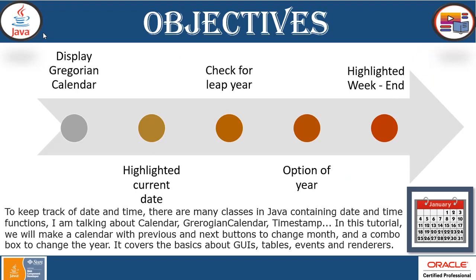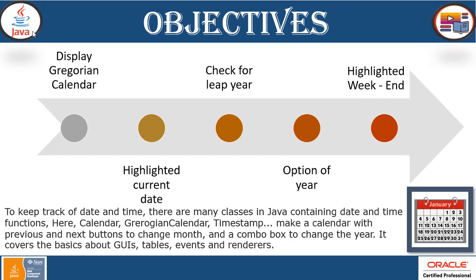Now, let's take a look at the objectives to keep track of date and time. There are many classes in Java containing date and time functions — yet calendar,